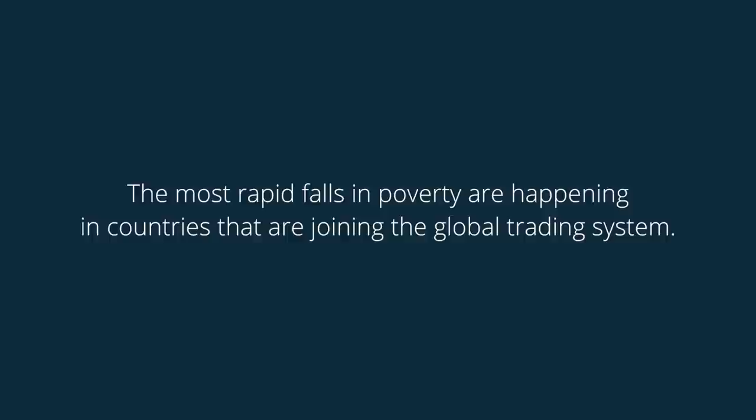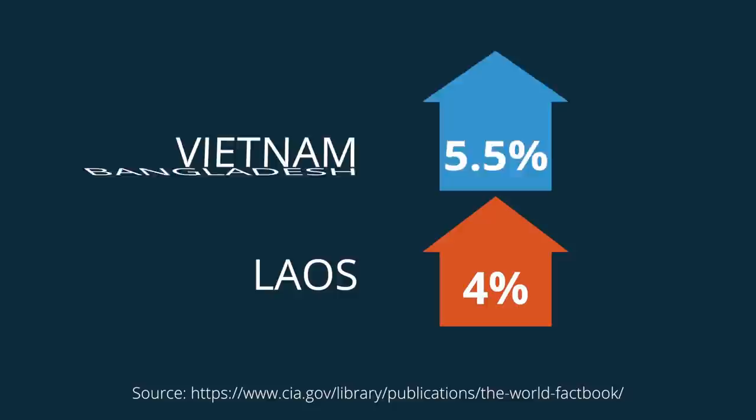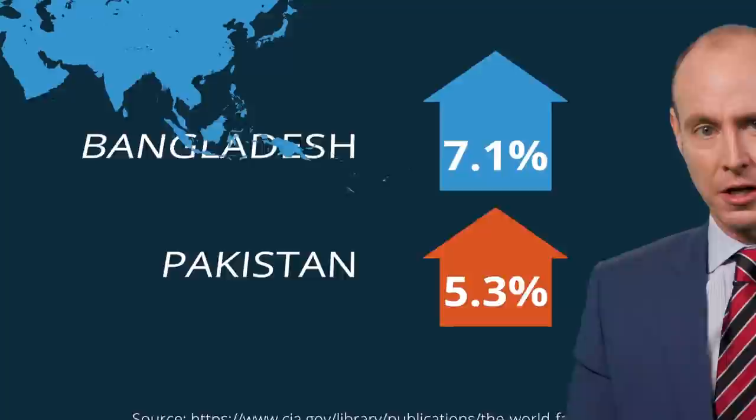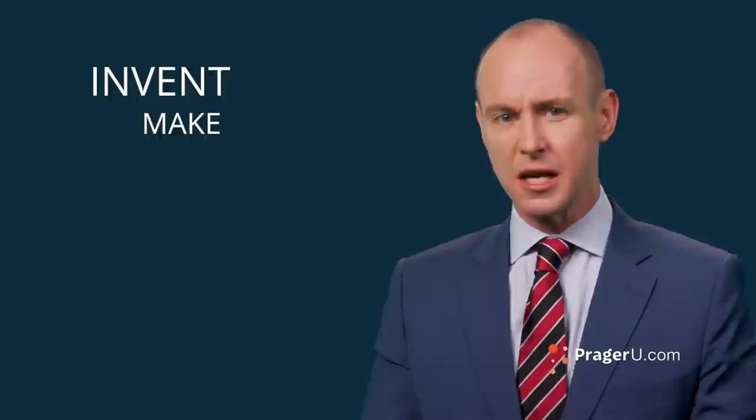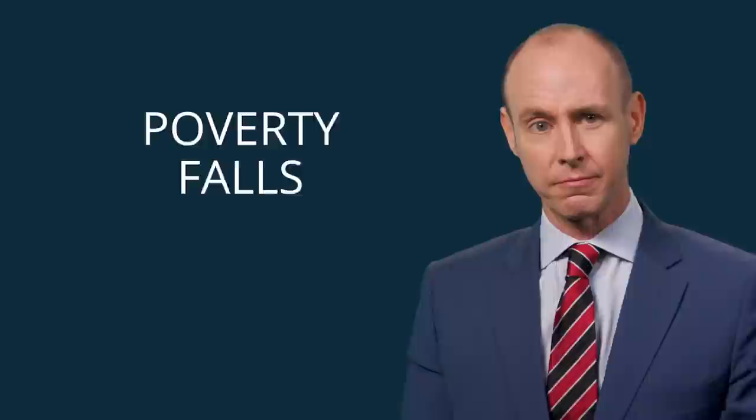And what's caused that miracle? Not any UN development program. Not any government aid scheme. What caused it was the market. The most rapid falls in poverty are happening in countries that are joining the global trading system. Compare growth rates in free-trading Colombia and protectionist Venezuela. Or in free-trading Vietnam and protectionist Laos. Or in free-trading Bangladesh and protectionist Pakistan. It's the same story every time. China after 1979. India after 1991. You remove barriers to trade. Prices fall. Your people no longer have to work every hour just to afford food and basic commodities. They have time to invent and make and buy and sell other things. The whole economy is stimulated. Poverty falls.